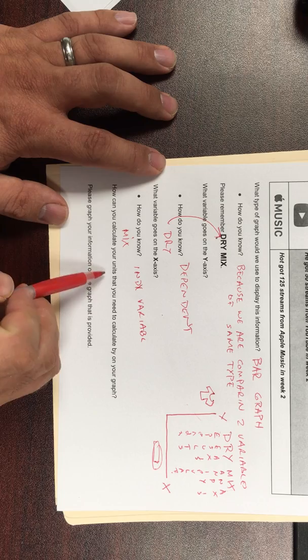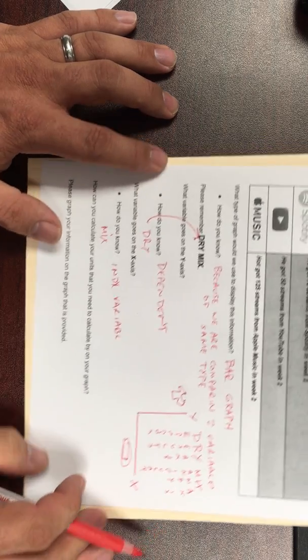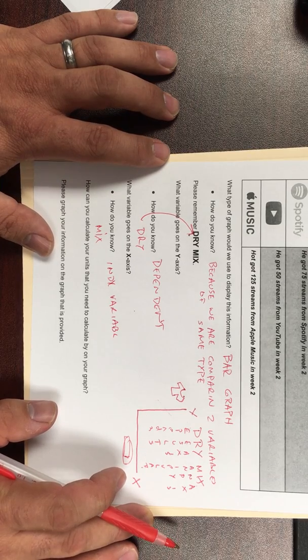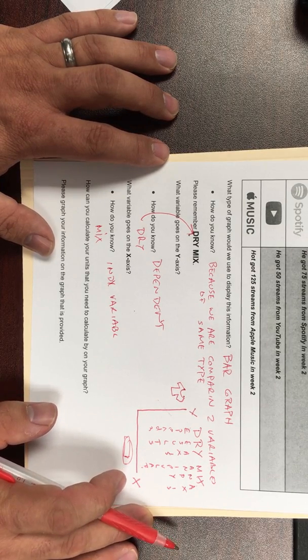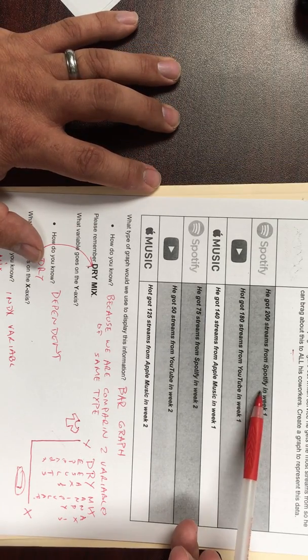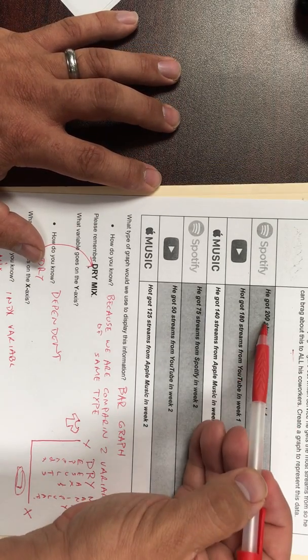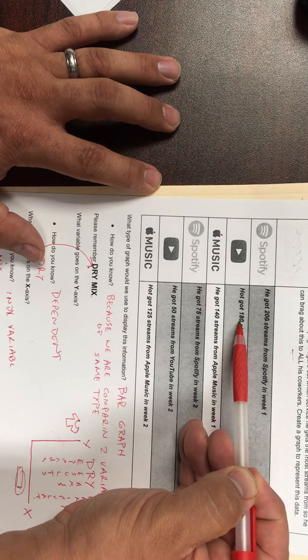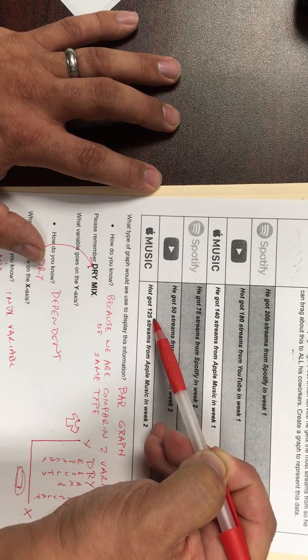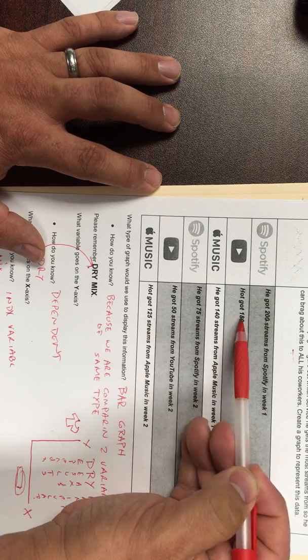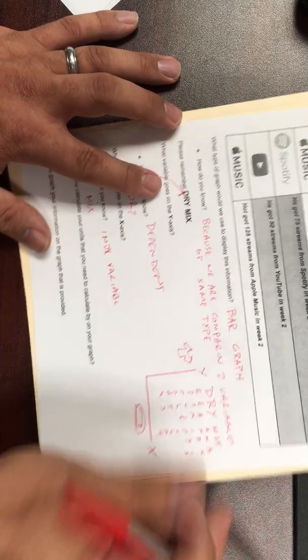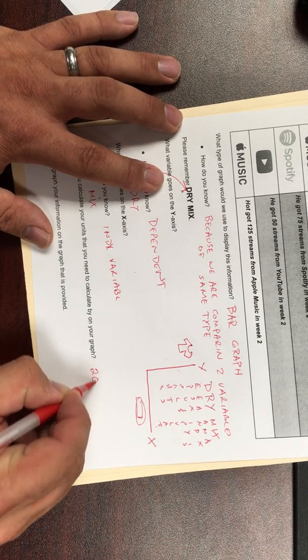How do you calculate the units you need to calculate a graph? This is going to be the total number that I have, so the biggest number divided by the total number of spots. So here, I want to go through my data and look for what is the biggest number. So here I have 200, 180, 140, 75, 50, 125. So overall, looking at those, the biggest number is going to be 200. So I'm going to put 200 over here.